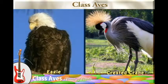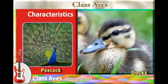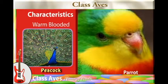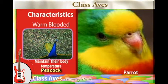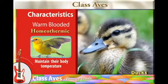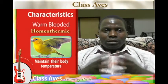One of the first characteristics is that all these organisms are warm-blooded, meaning that they can maintain their body temperatures independently from those of the environment. Therefore we refer to them as homoiothermic.